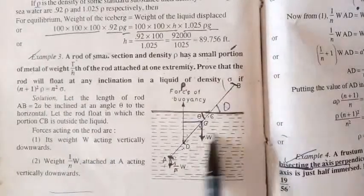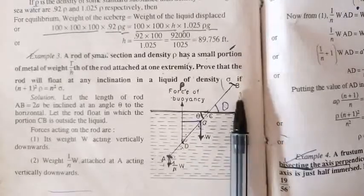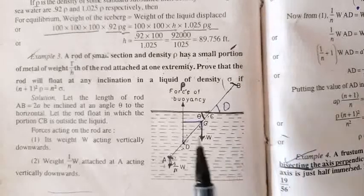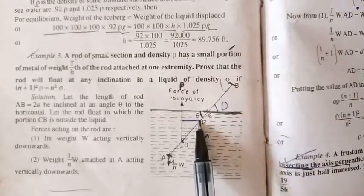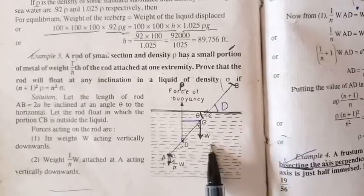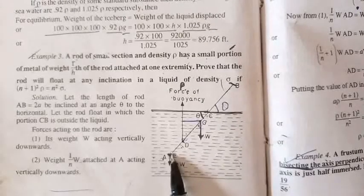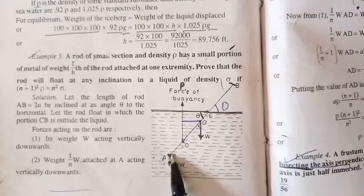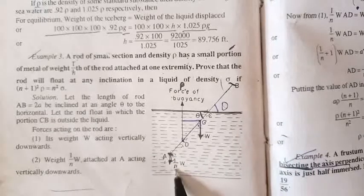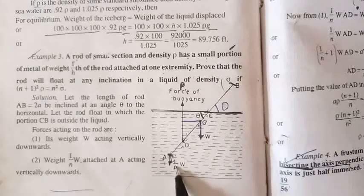Let us consider this liquid of density sigma. AB is the rod having its center of gravity at the midpoint G. The weight of the rod is W, acting at midpoint G. At one extremity of the rod a weight equal to 1/n of W is attached.